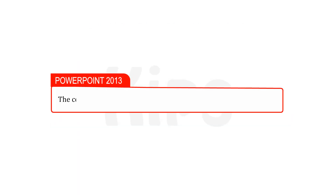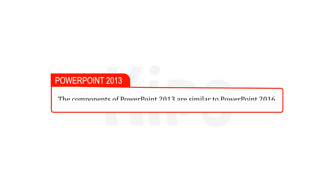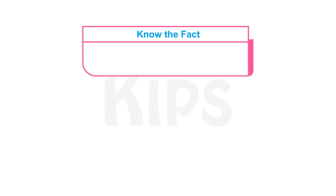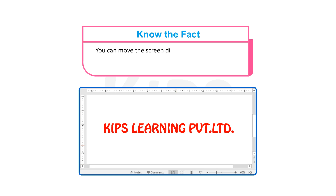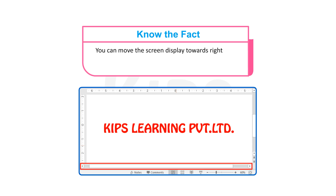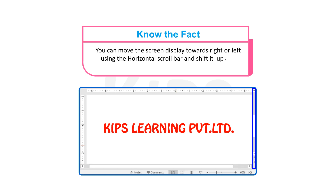The components of PowerPoint 2013 are similar to PowerPoint 2016. There are two scroll bars — vertical and horizontal. You can move the screen displayed towards right or left using the horizontal scroll bar, and shift it up and down with the help of the vertical scroll bar.